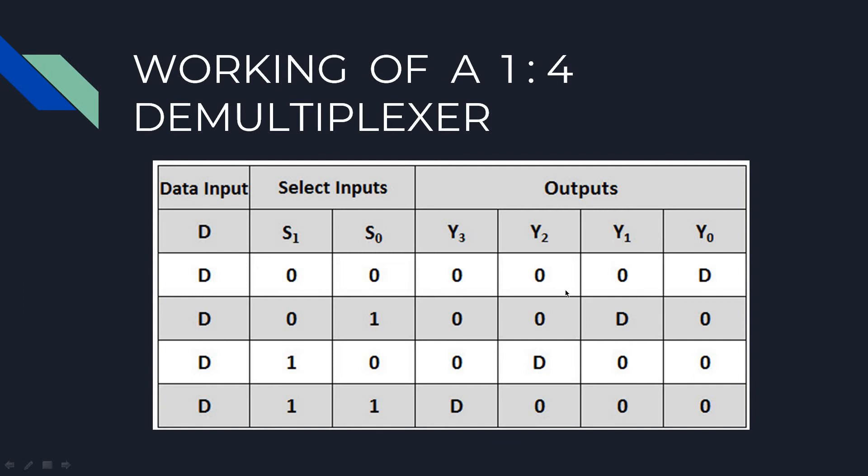If the selection lines are 0,0 your Y0 will have D. If D is 0, your Y0 is 0. If D is 1, your Y0 is 1. For selection lines 0,1, your Y1 is D. If your selection lines are 1,0, your Y2 is D. If both selection lines are 1, your Y3 is D.